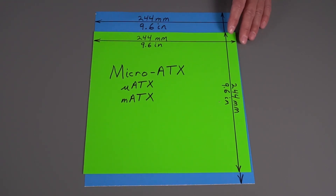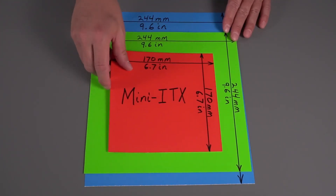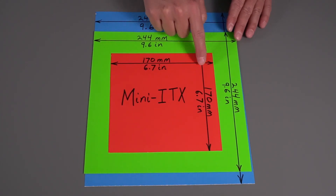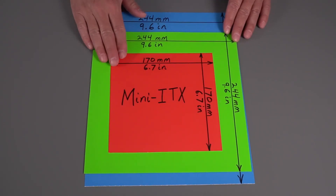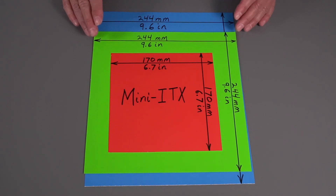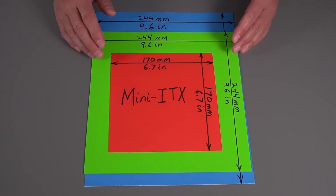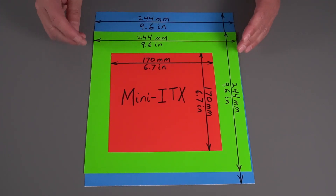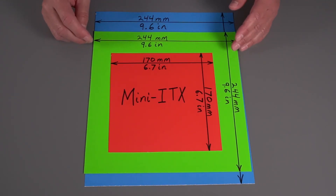The Mini-ITX motherboard is even smaller. It is 170 millimeters by 170 millimeters, or 6.7 inches by 6.7 inches. These are the three that you will likely see most often — you would normally buy one of these three if you're building a computer on a mainstream platform.